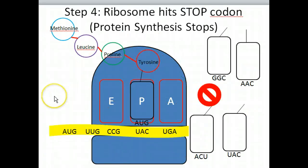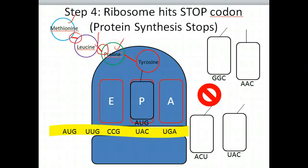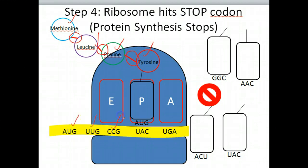Let's go to the last slide and see what has happened. We started with methionine, which was bound to leucine. Leucine was bound to proline, and proline was bound to tyrosine. You can actually go through and literally see the codons that brought each of these amino acids. And now we've come to the end of our messenger RNA transcript.